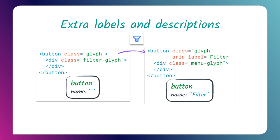As we also saw in our previous episode on labeling, ARIA can add extra labeling and descriptive text to an element to give it an accessible name. For example, if you have an image-only button that doesn't use an actual image element — so you don't have access to an alt attribute — you can still use aria-label to give that element its own accessible name and have it announced properly by a screen reader.